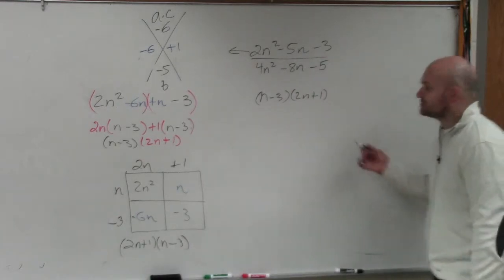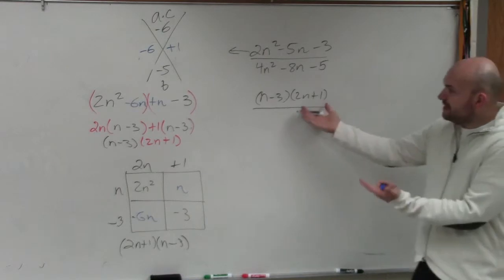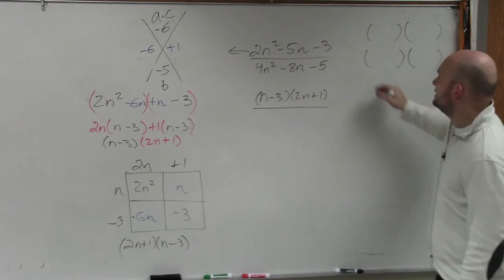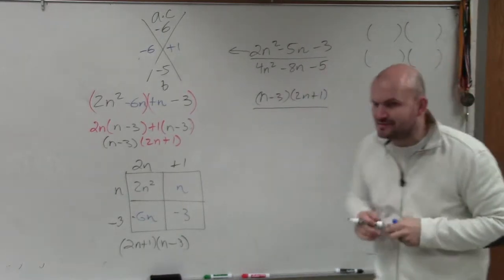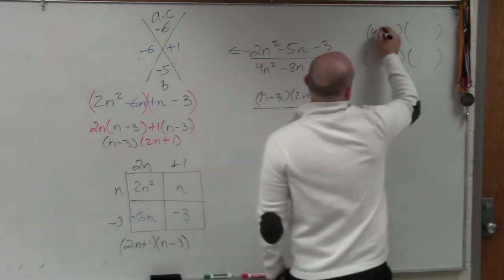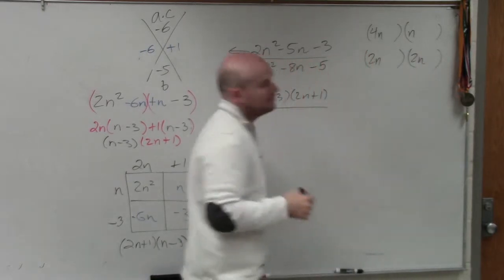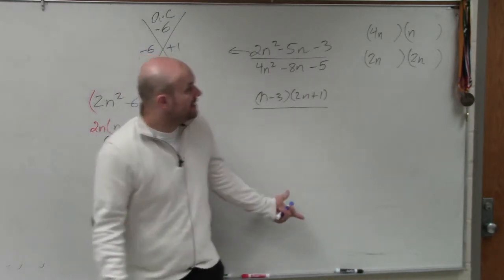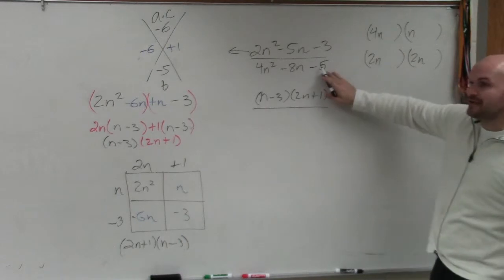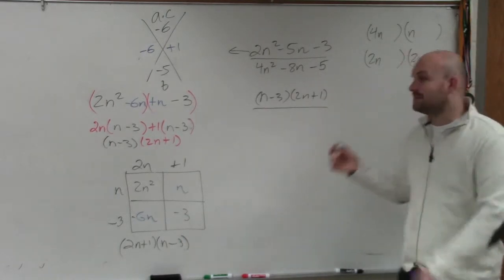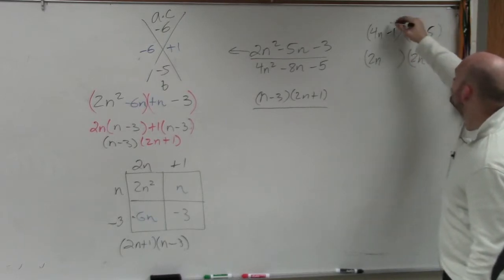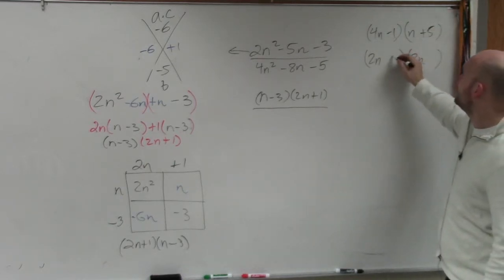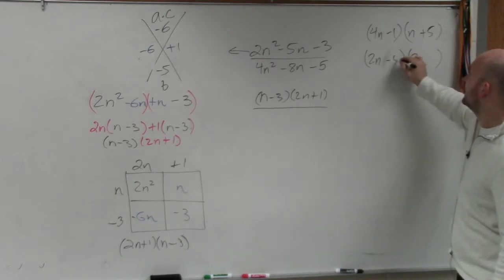The other technique is to simply just start doing these, thinking about these in your head. You're multiplying these. You're getting two binomials. These two binomials need to multiply to give you 4n squared, and they need to multiply to give you negative 5. So there's only so many terms. You could do 4n times n, or you could do 2n times 2n. That's the only two ways that your first two terms can give you 4n squared. The other way is you could either have, to give you negative 5, it's either negative 1 and positive 5. So you could do like negative 1, positive 5, or you could do positive 1, negative 5, or you could do positive 5, negative 1. You could flip-flop those. Or you could also do negative 5, positive 1.